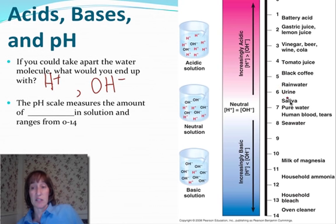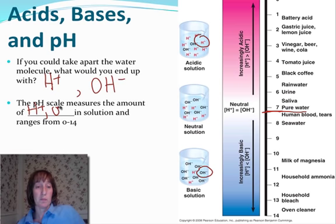You have pure water around 7. Notice how saliva tends to be a little bit towards the acidic end of the scale. Blood, on the other hand, or your tears, tend to be heading in the direction of the more basic side of the scale. Seawater, milk of magnesia, or if you think of Tums or something like that when you have acid reflux, and then we go all the way down to ammonia, bleach, and then oven cleaner. So we have more hydrogen ions on the acidic end of the scale, and we have more hydroxyl ions on the basic end of the scale. We have pure water right in the middle at number 7, and you notice that there's an even distribution between the hydrogen ions and the hydroxyl ions. So the pH scale measures the amount of basically hydrogen ions in solution and ranges from 0 to 14.